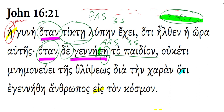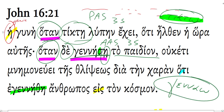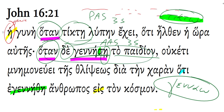I looked in BDAG, and it says occasionally tiktō is used with a male subject, although I don't remember a passage where it has been used that way. 'Gennáō,' interestingly, is most frequently — overwhelmingly — used with a male subject, especially in genealogical passages: so-and-so begot so-and-so. But here we see that it is also used with a female subject.